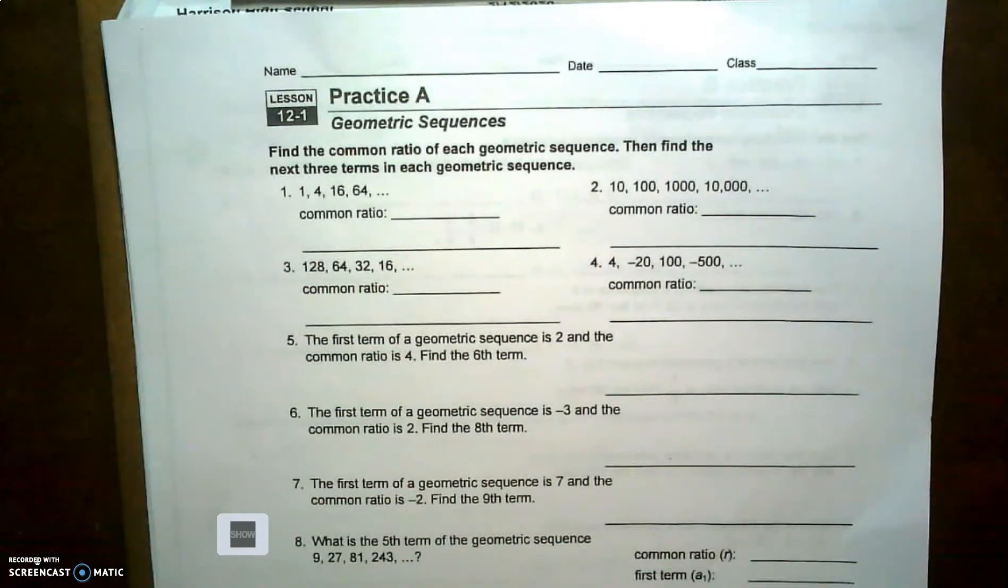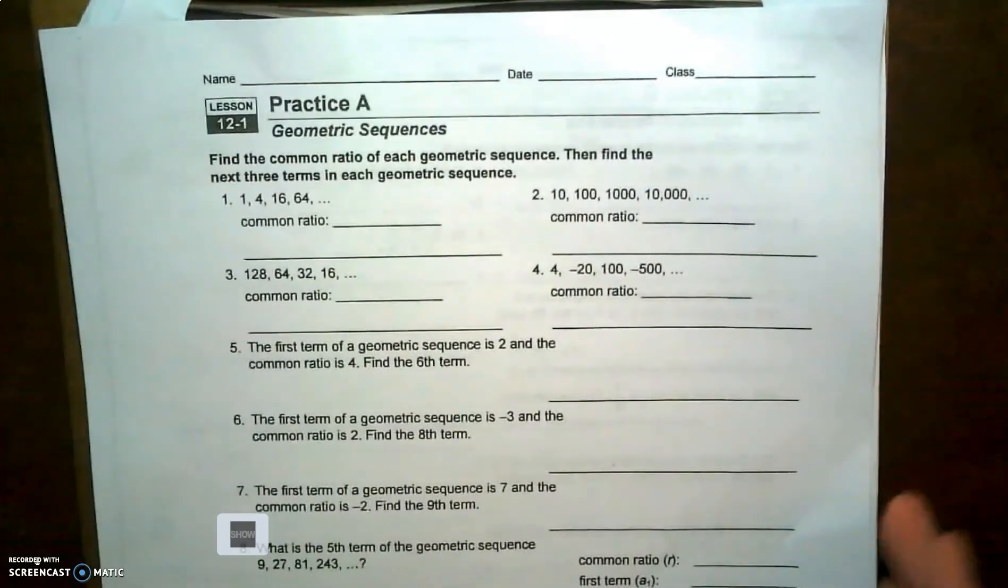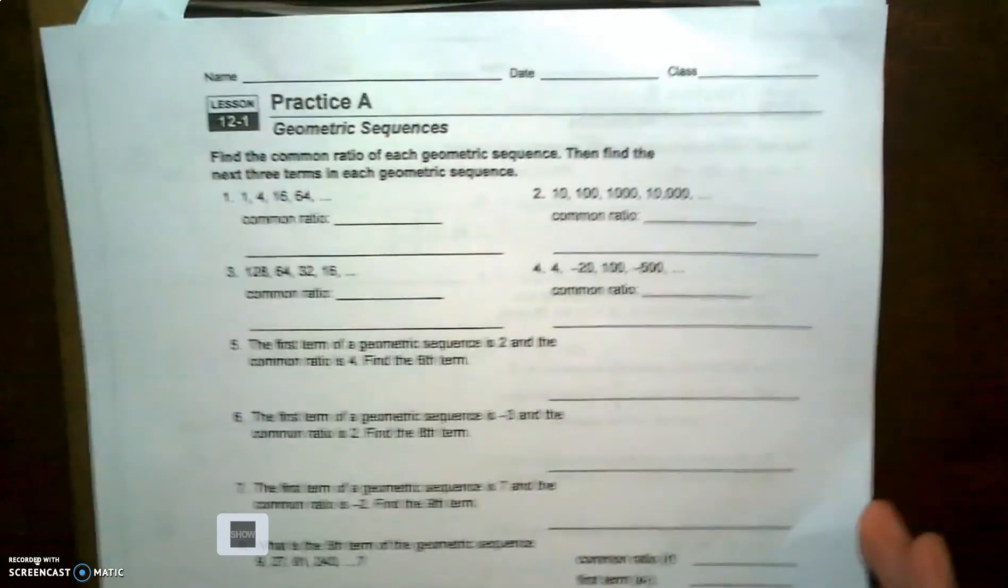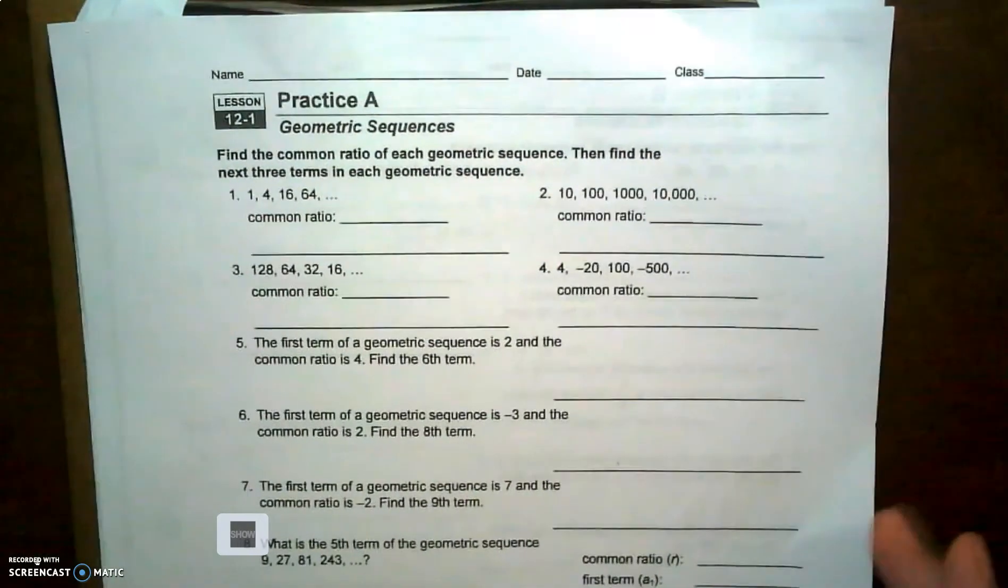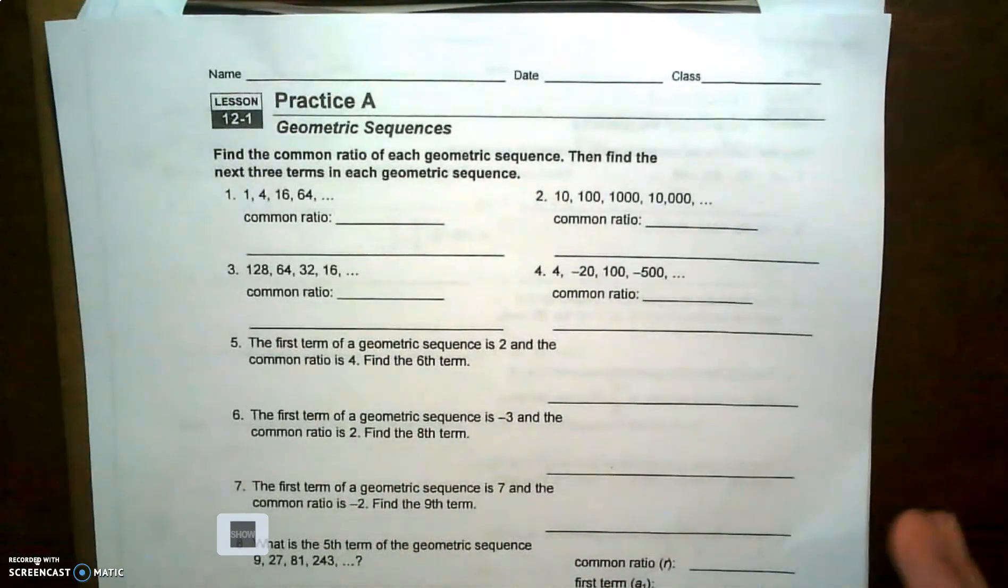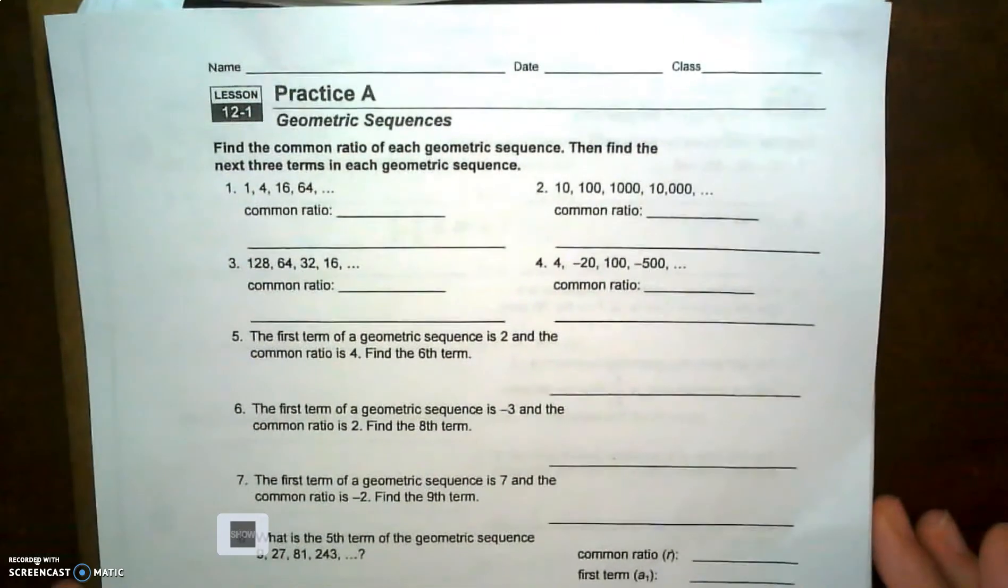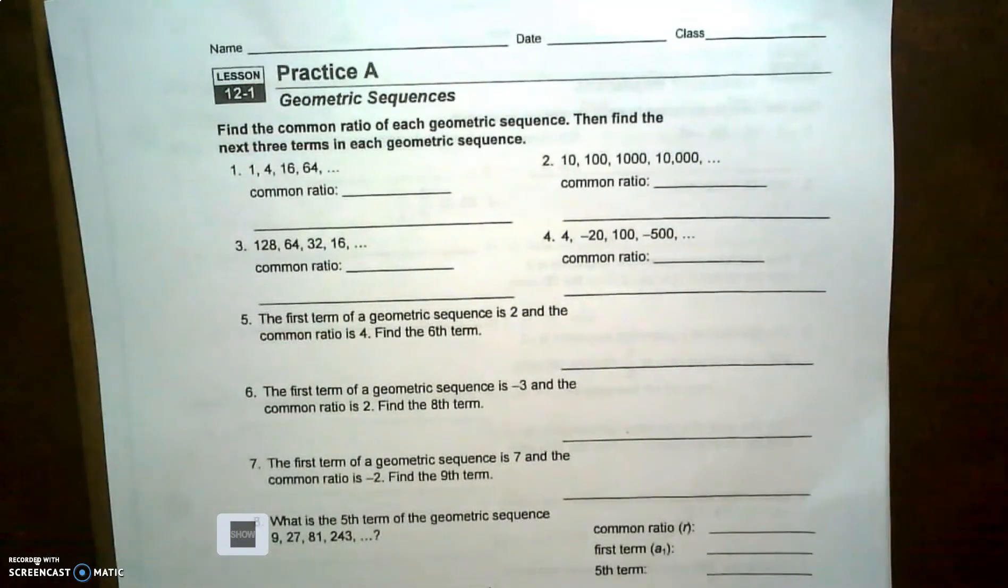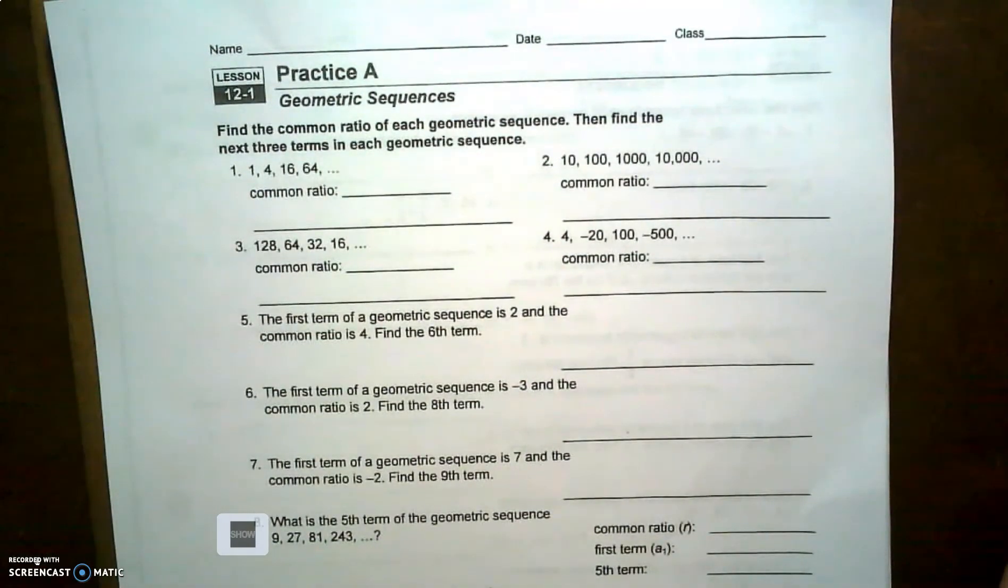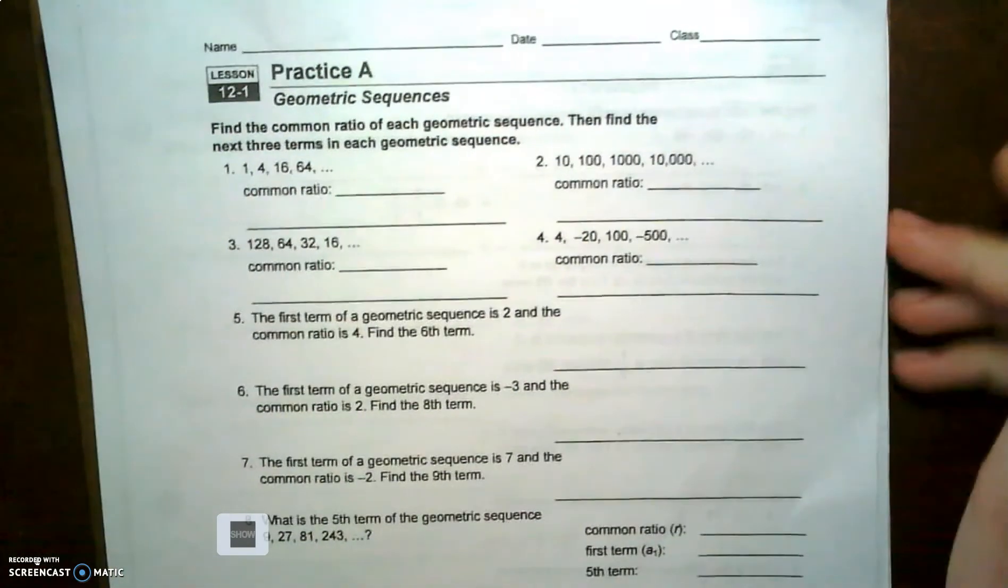All right, let's talk about some more geometric sequence examples. I'm going to go through and do the evens and then put the answer key on the blog just so the video is not too long. The first set of problems here: find the common ratio of each geometric sequence, then find the next three terms.